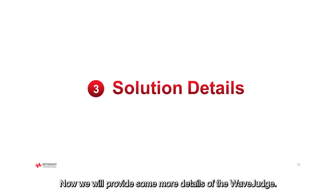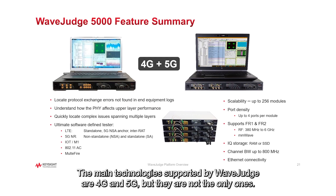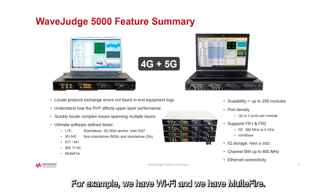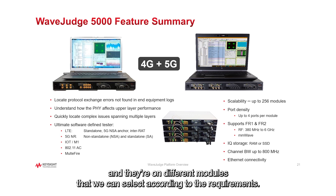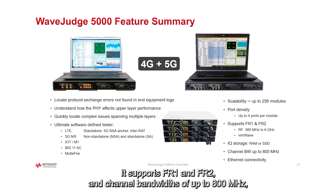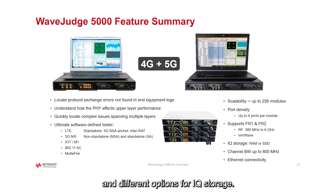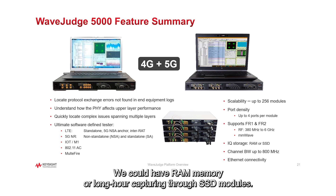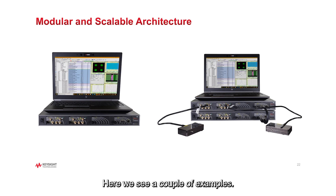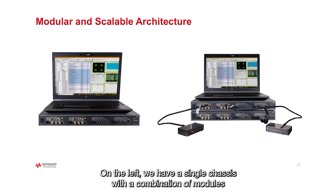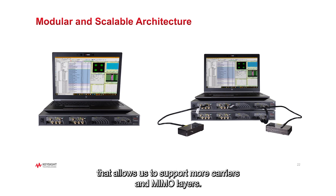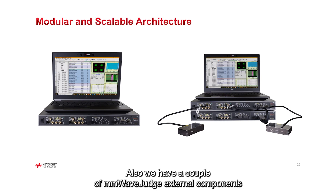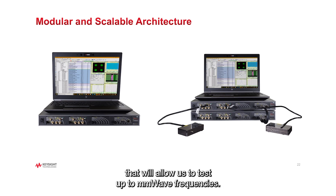Now we will provide some more details of the WaveJazz. The main technologies supported are 4G and 5G, but they are not the only ones — for example, we have Wi-Fi and Multifier. It is a scalable architecture, so we have a chassis that we can stack up, and there are different modules we can select according to requirements. It supports FR1 and FR2, channel bandwidth up to 800 MHz, and different options for IQ storage — RAM memory or long-hour capturing through SSD modules. On the left, a single chassis can test up to 6 GHz, and on the right, a double chassis supports more carriers and MIMO layers, plus external mmWaveJazz components to test up to mmWave frequencies.